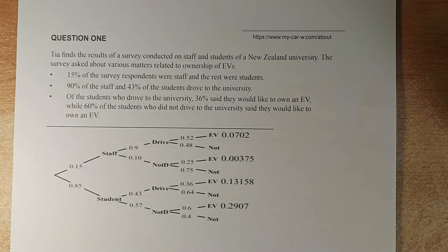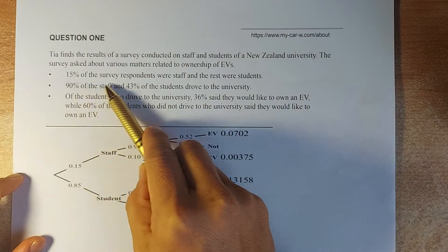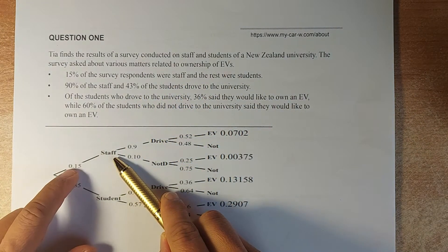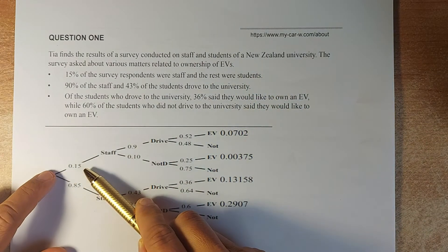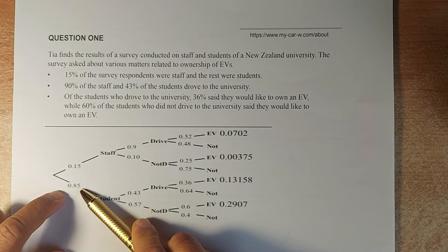Question 1. Tia finds the results of a survey conducted on staff and students of New Zealand University. The survey asks about various methods related to EVs, electric vehicles. We are going to draw the probability tree. 15% of the survey respondents were staff, so 0.15, and the rest were students: 1 minus 0.15 is 0.85, so students is 85% or 0.85.